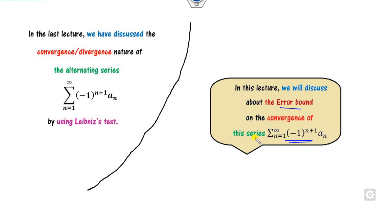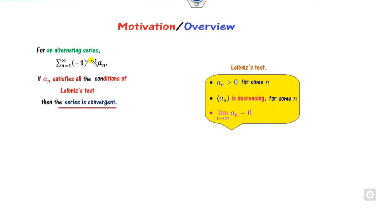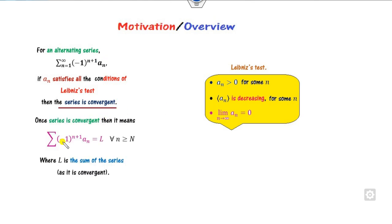Now in this lecture we will see what is the actual error bound on the convergence of this series. Make sure that the series must be convergent in order to find the bound. Assume that any alternating series is of this form, and by using the Leibniz test, if you prove that a_n satisfies all three conditions, then this alternating series is convergent, which means it has a finite sum L.